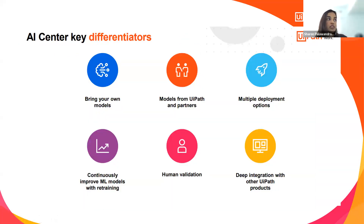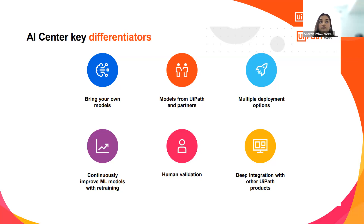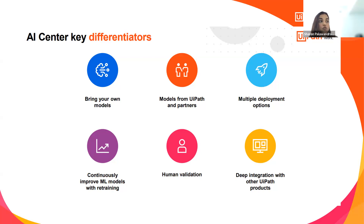Key differentiators of AI Center: you can bring your own model, use models from UiPath or partners, and you have multiple deployment options. You can deploy into different environments — if developing a model in dev, you can use that same model in production by migrating the ML package. You have continuous retrainability, human validation, and integration with other UiPath products like your RPA or document understanding process.